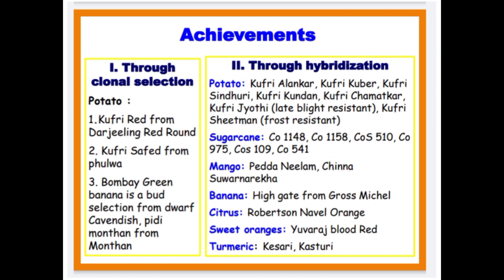Achievements through clonal selection: In potato — Kufri Red from Darjeeling Red Round, Kufri Safed from Pulva. Bombay Green banana is a bud sport selected from Dark Cavendish. Pd Monthan from Monthan. Through hybridization in potato — Kufri Alankar, Kufri Kubair, Kufri Sindori, and Kufri Chamatkar. In sugarcane — CO1148, CO1158, COS5110, CO975. In mango — Peda, Neelum, China. In banana — Highgate from Gros Michel. In citrus — Navelina, Rival orange.